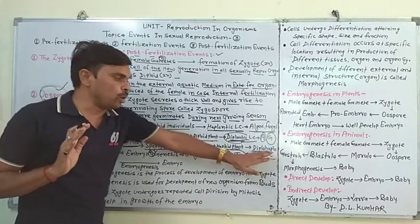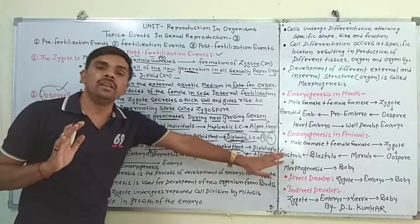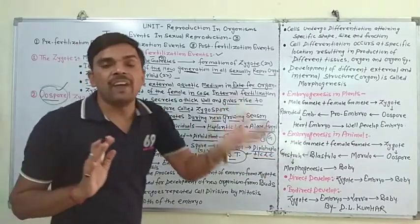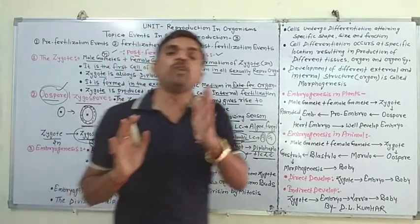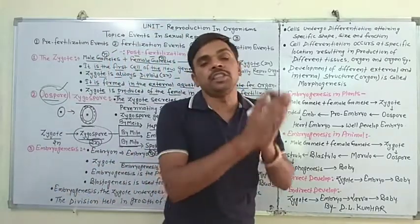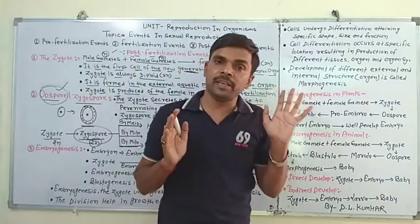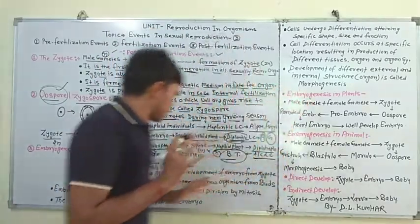इस तरीके के life cycle को हम diplo-haplontic life cycle कहते हैं। Bryophyta और Pteridophyta में इसी तरीके का life cycle होता है।